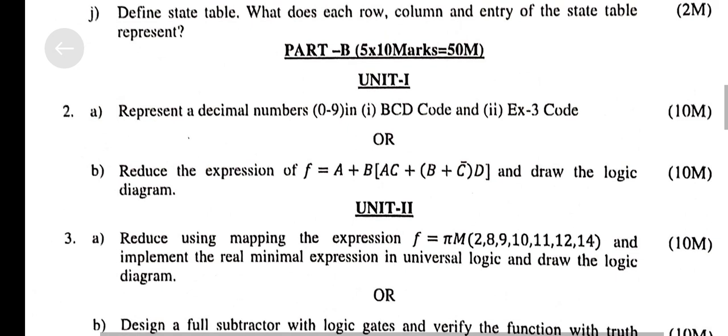Part B — 10 marks questions. Unit 1, Question A: Represent decimal numbers 0 to 9 in BCD code and EX3 code. Reduce the expression F = A + B[AC + [B + C̄]D] and draw the logic diagram.